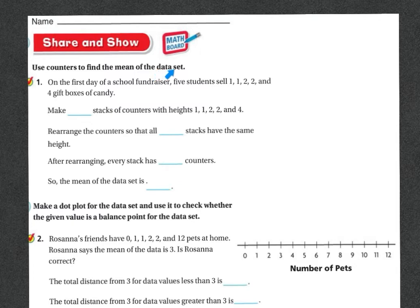Use counters to find the means of the data set. Number one. On the first day of school fundraiser, five students sell 1, 1, 2, 2, and 4 gift boxes of candy. So one person sold 1, the next person sold 1, the next person sold 2, the next person sold 2, and the last person sold 4.